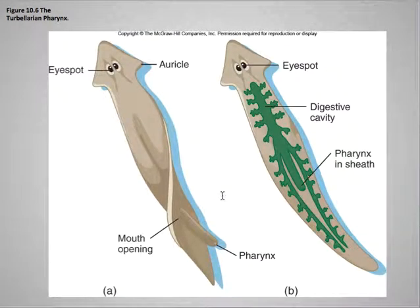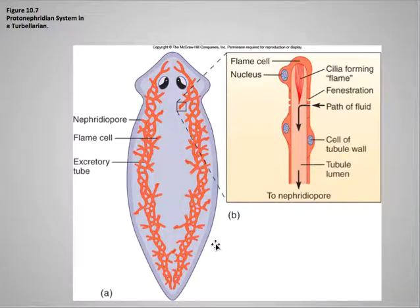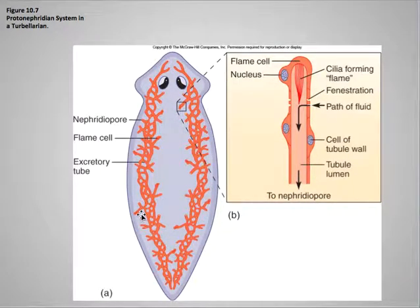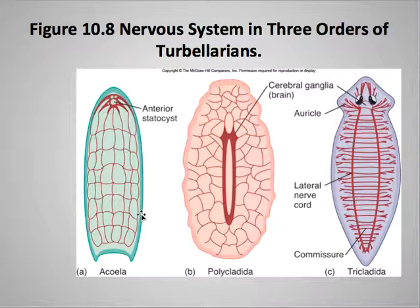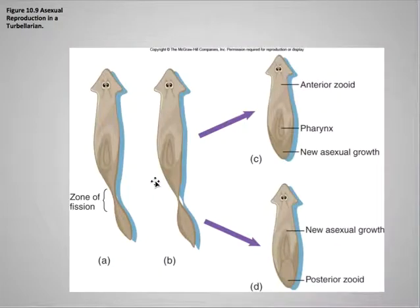You should have seen the pharynx when you observed the planaria. Here you're looking at the protonephridia, which are located around the outside edges of the body, and you find the flame cells there. There's also a network of nervous systems almost like a net throughout the turbellarians. Finally, looking at asexual reproduction — they actually undergo fission.